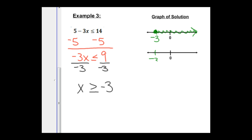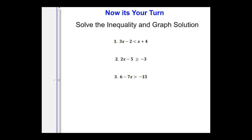Or if we want to do it the other way, we would be using a square bracket at the negative 3 and shading all the way to the right. Now it's your turn. Here are three examples. Solve them and graph the solution.